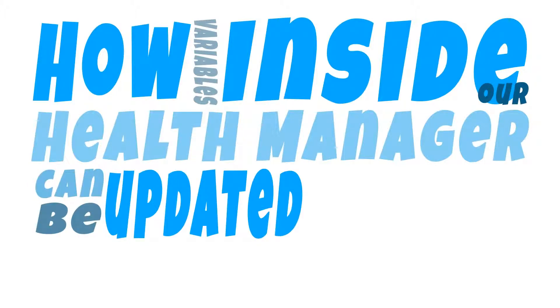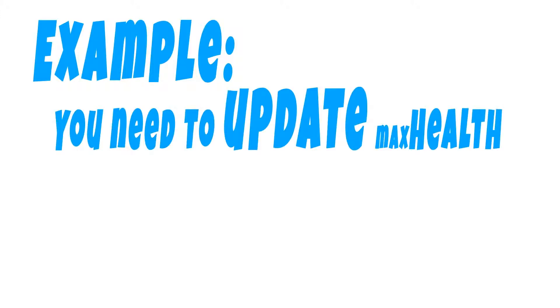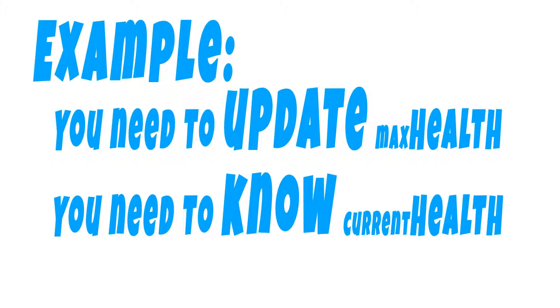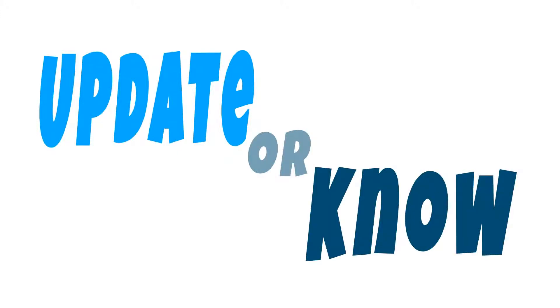Today we're talking about how variables within our Health Manager can be adjusted from outside our Health Manager. An example of when you may want to do this is if your player levels up and you want to increase their max health, or you need to know the player's current health because an object within your game world only triggers if your player's at half of their maximum health. These are instances where another script or manager within your game is going to want to either update a variable within your Health Manager or know the value of a variable within your Health Manager.